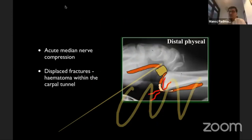A few interesting things to remember about physeal injuries. They are rare but sometimes you can get caught out. Acute median nerve compression can happen with severely displaced fractures — you can see on the illustration how the median nerve is tented over the metaphyseal spine. These are indications to quickly reduce. They are much more painful, have median nerve sensory symptoms, and you may even have to decompress the carpal tunnel.